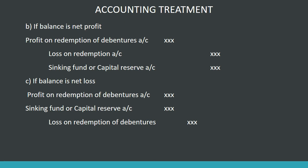Profit on Redemption of Debentures Account to Loss on Redemption Account to Sinking Fund or Capital Reserve. Profit on Redemption of Debentures Account to Sinking Fund or Capital Reserve Account. So if we have a profit, we can count it as profit, and we can count it as capital.